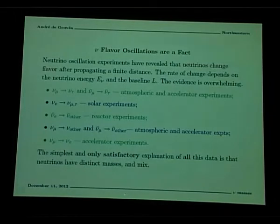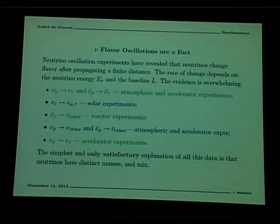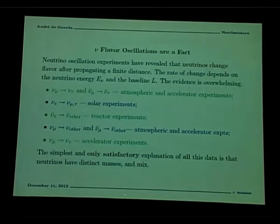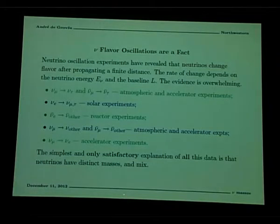Neutrino oscillations are a fact. There's no doubt that neutrinos can change flavor as a function of the baseline—how long they've traveled—and as a function of their energy. The list of experiments that have confirmed neutrino oscillations keeps growing. We have evidence for muon neutrinos detected as tau neutrinos from the atmosphere, electron neutrinos from the sun detected as muon or tau neutrinos, electron antineutrinos from reactors disappearing in transit, muon neutrinos disappearing over 1,000 km to a detector, and evidence for muon neutrinos being detected as electron neutrinos.